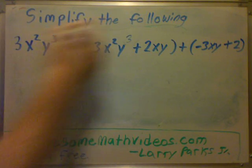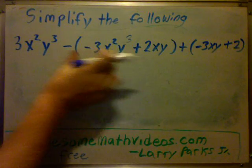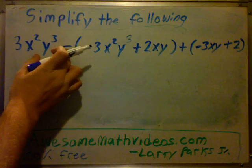Okay, here our question is, simplify the following. We have 3x²y³, and then we have a parenthesis, and we have a minus sign outside.